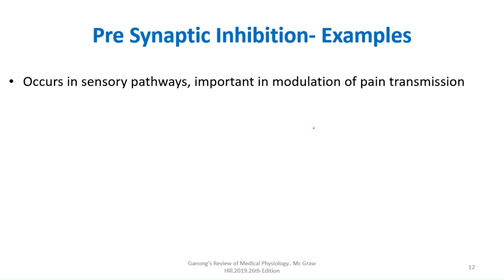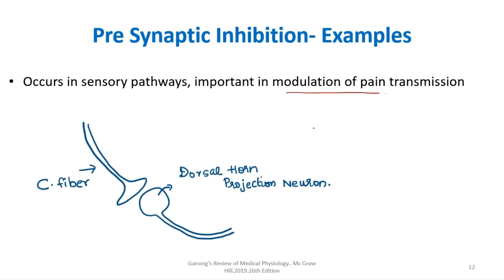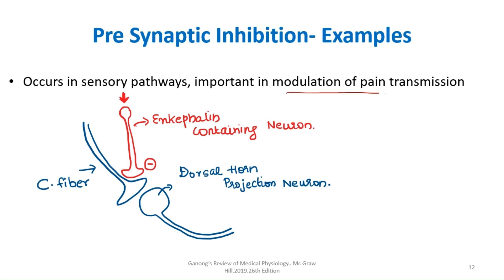Presynaptic inhibition usually occurs in sensory pathways and is important in modulation of pain transmission. In pain transmission, a nociceptor C-fiber synapses onto a dorsal horn projection neuron. During central modulation of pain via descending inputs, an enkephalin-containing neuron synapses on the presynaptic terminal and inhibits it, thereby decreasing pain transmission. This is a key example of presynaptic inhibition.